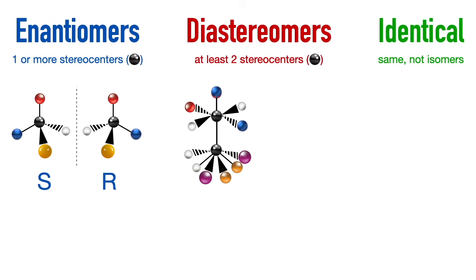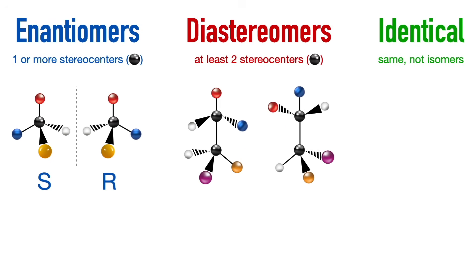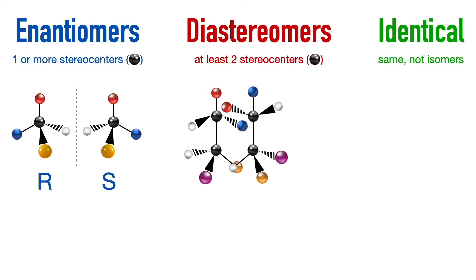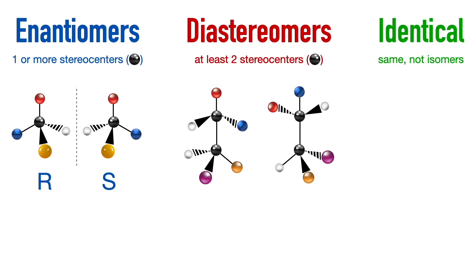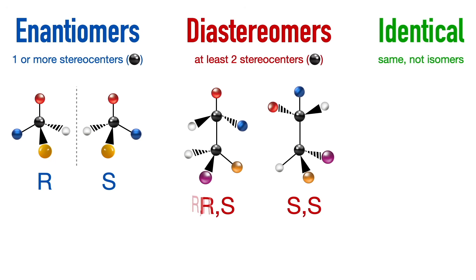Diastereomers are molecules also with the same molecular formula and connectivity that are also non-superimposable; however, they are non-mirror images of each other, meaning they have varying orientations of substituents around one or more of their stereocenters when facing each other, which means their absolute configurations are not the same nor opposite — just different from each other. So if one molecule has RS configuration, the other might be SS, or RR and SR, and so on, with a few varying configurations.